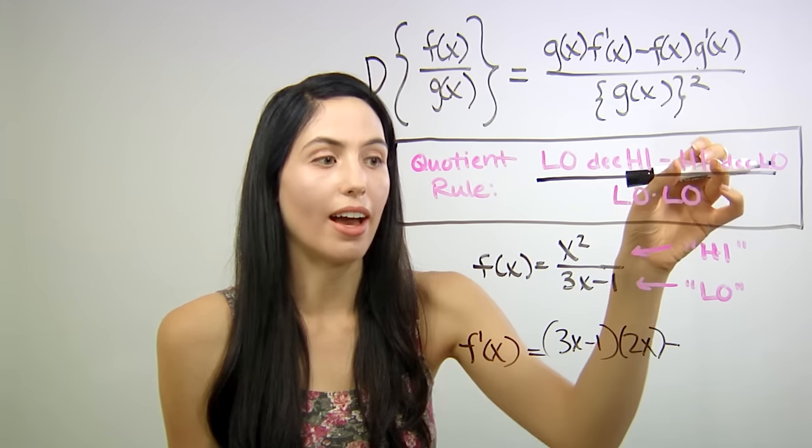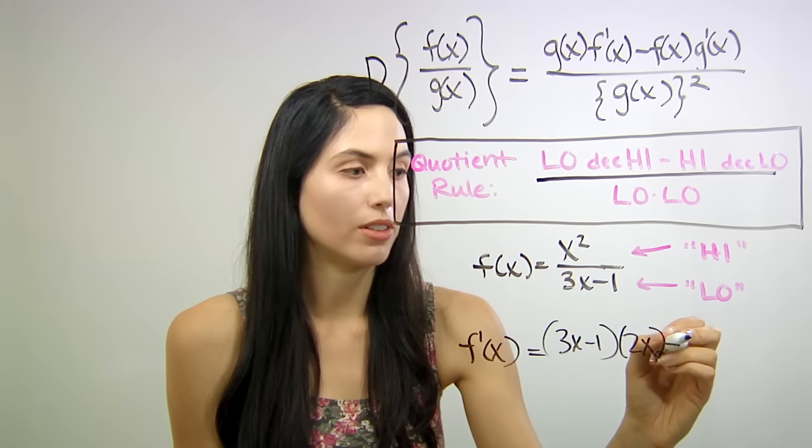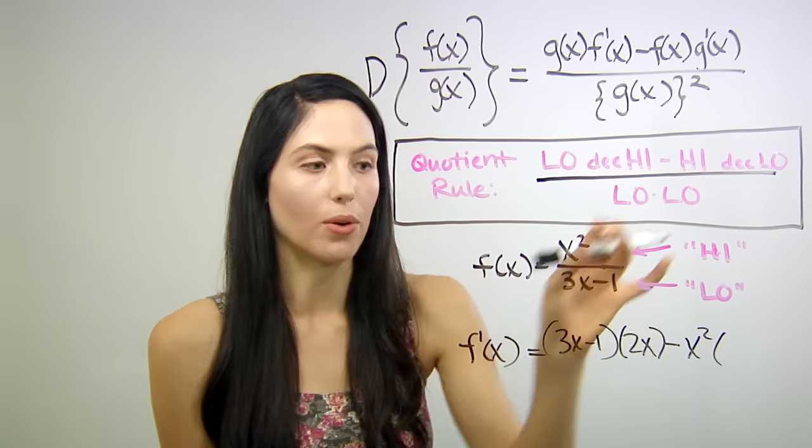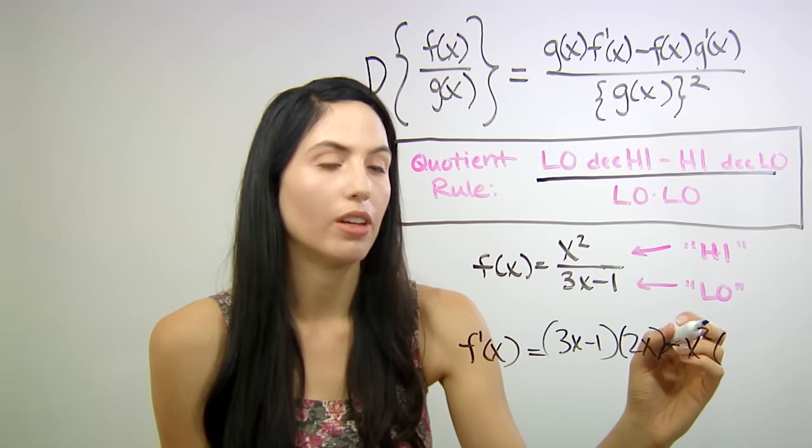minus high, just x squared function, times d low, derivative of 3x-1, which is 3.